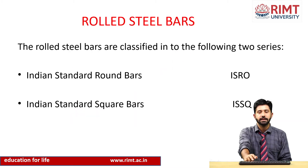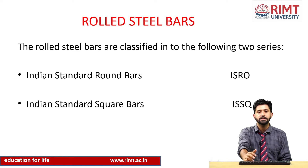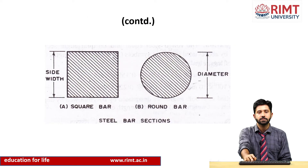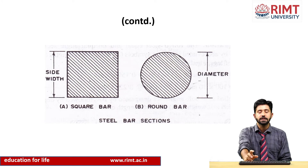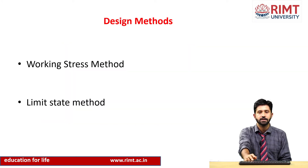In civil engineering projects we use two types of steel bars: round bars (Indian Standard round bars) and square bars (Indian Standard square bars). The size of round bars is defined by the diameter — for example, 14 mm, 16 mm, or 18 mm diameter bars.